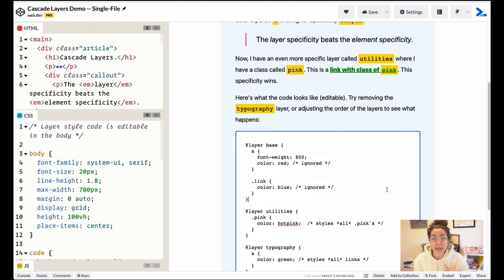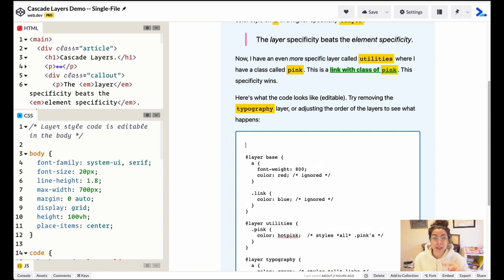So we could apply our specificity and order layers that way in the UI, or at the top of the page, we could just set the order of all the layers. Now the order of the specificity of the layers is determined based on the first time the layer is set. So if we do this before we're putting stuff in the layers or before we're importing layers, that's going to be the source of truth.